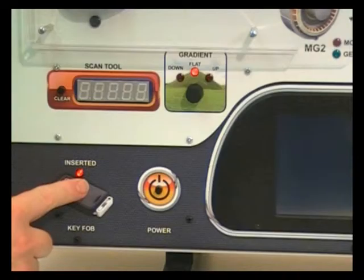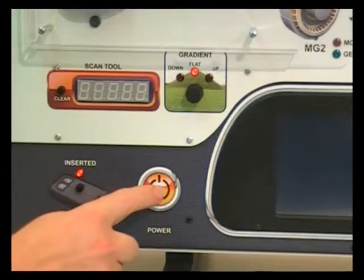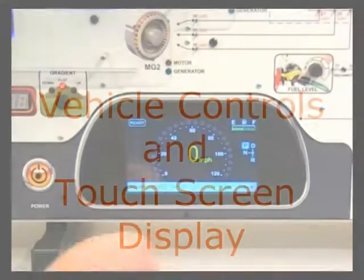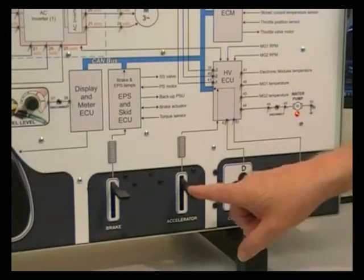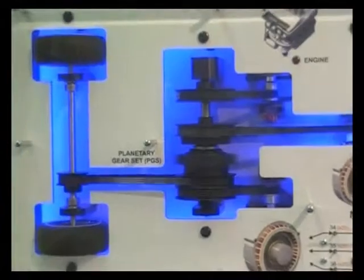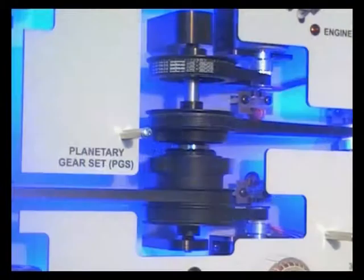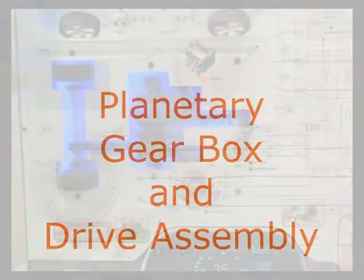Use the onboard vehicle controls and the touchscreen display to operate the vehicle, as well as view data and warning indicators. Demonstrate how the engine and electric motors are configured in each mode of hybrid operation with the planetary gearbox and drive assembly.